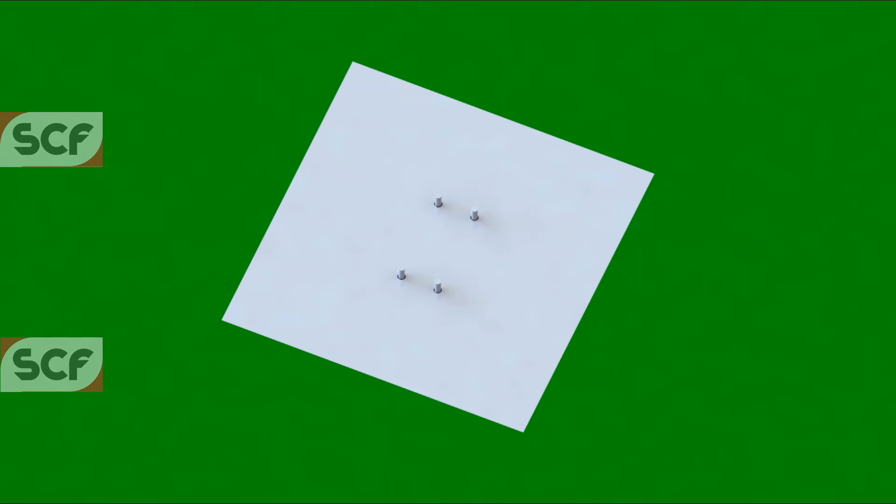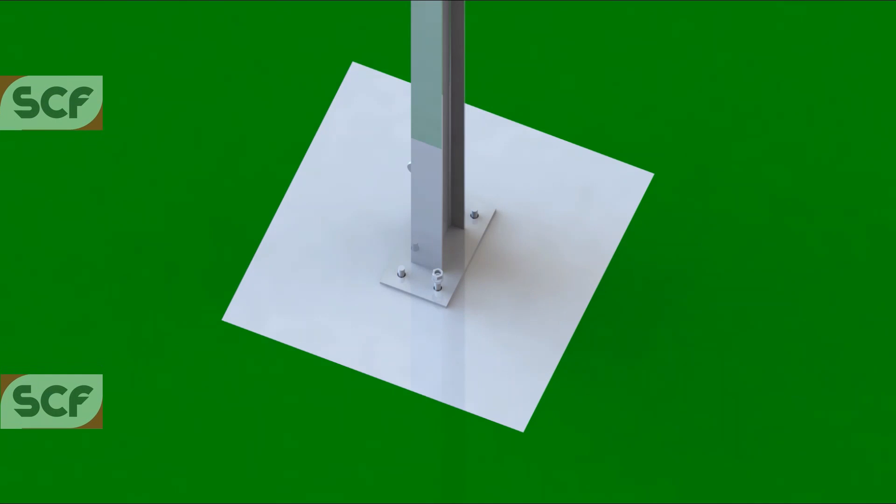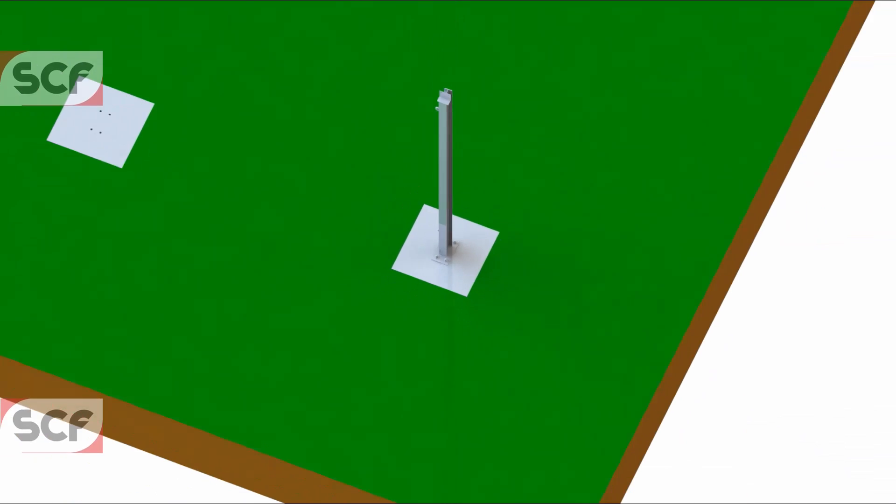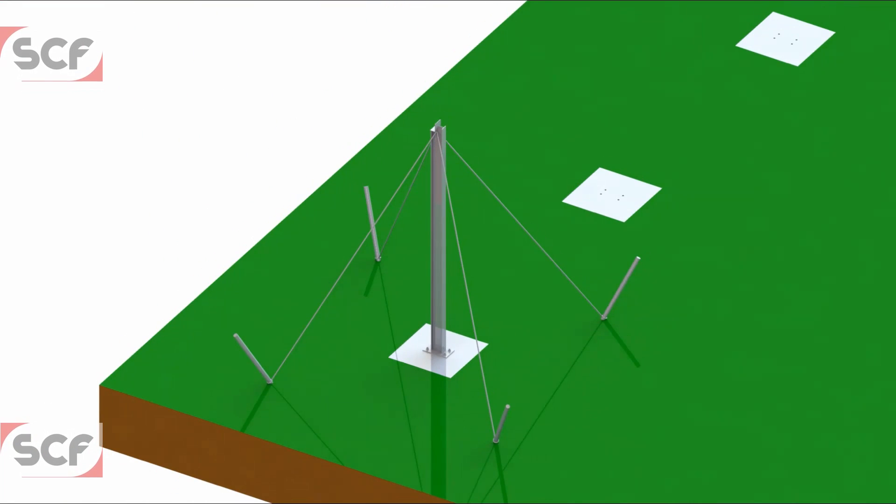Now lift the first column into position and bolt it down firmly. It is also important to tether it down securely, using for example ropes and iron bars.